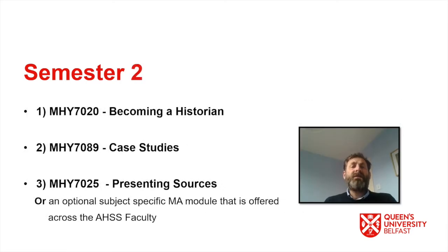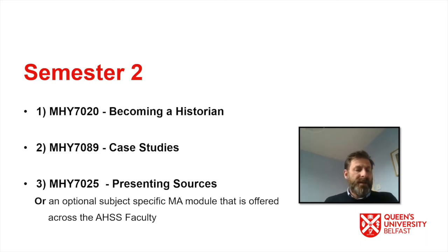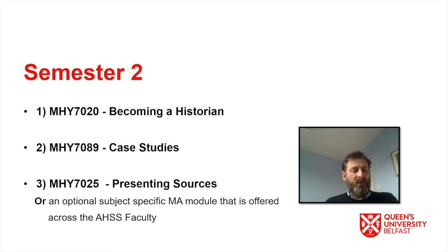The first module in semester two is called Becoming a Historian, which is designed to give you the skills to do research and to work on your dissertation. My colleagues will teach you about how to use archives, how to use numbers to write history, how to use literary sources, digital history, and visual sources, among others.